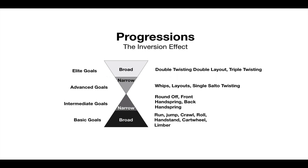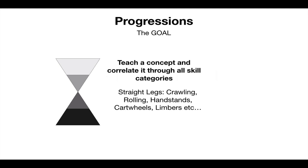Okay, so the goal: teach a concept and correlate it through all skill categories. The idea is you're going to have straight legs, and correlate straight legs in crawling, rolling, handstands, cartwheels, limbers. Can you take a concept and keep that theme going through all the progressions? That's the goal of progressions - you're progressing an idea or concept.